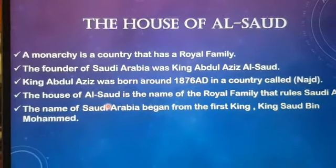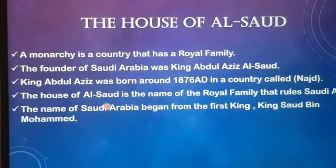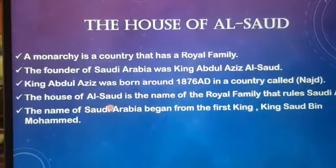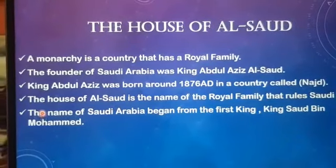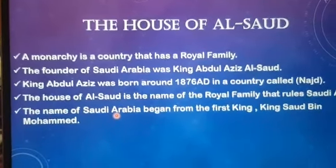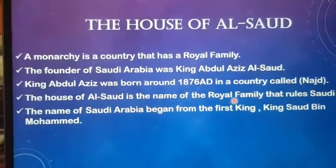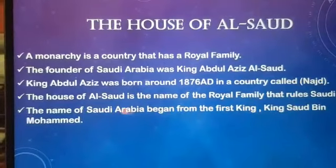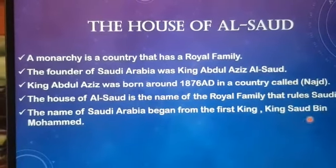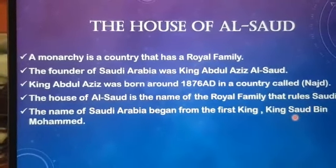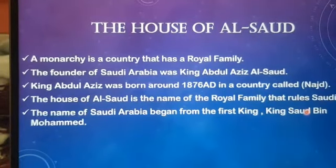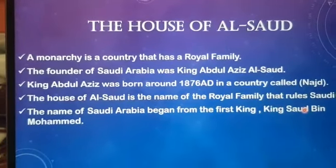The House of Al-Saud is the name of the royal family that rules Saudi Arabia. The name of Saudi Arabia began from the first king who ruled, King Saud bin Muhammad. And as you see, Saudi Arabia and King Saud — the name is actually very similar.